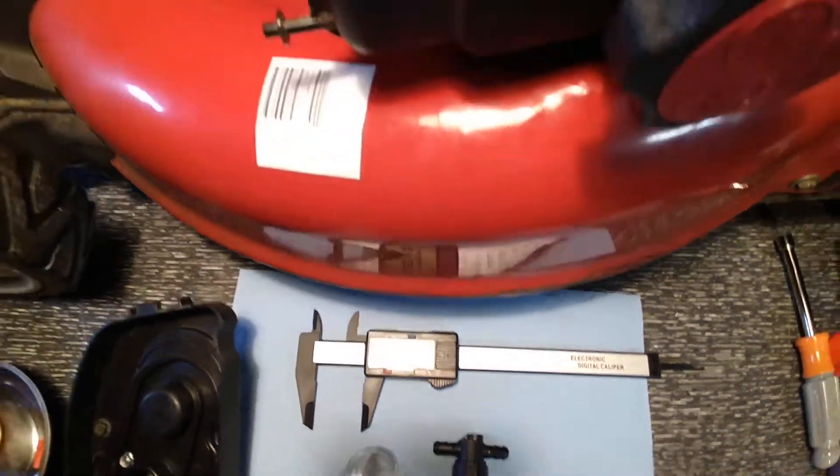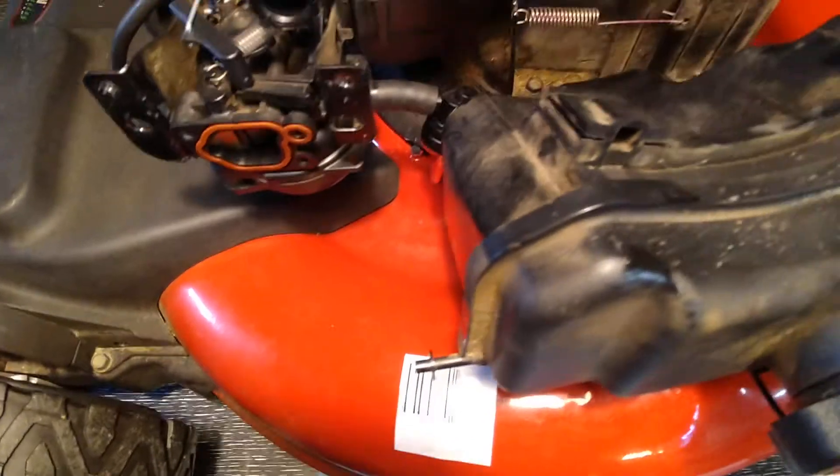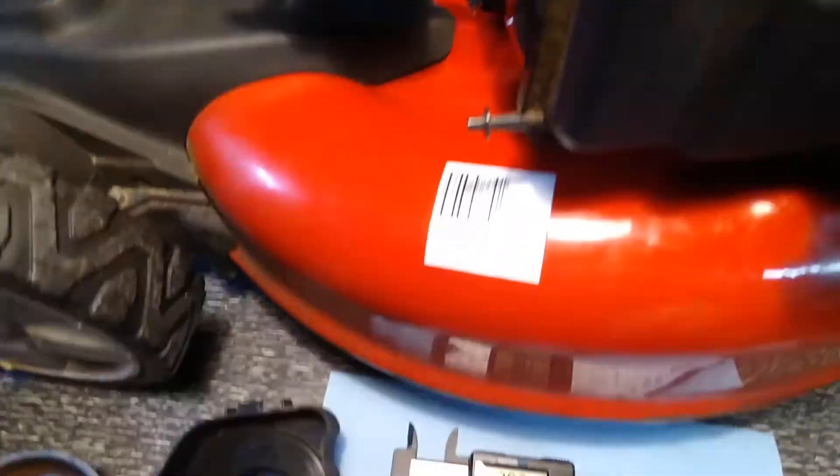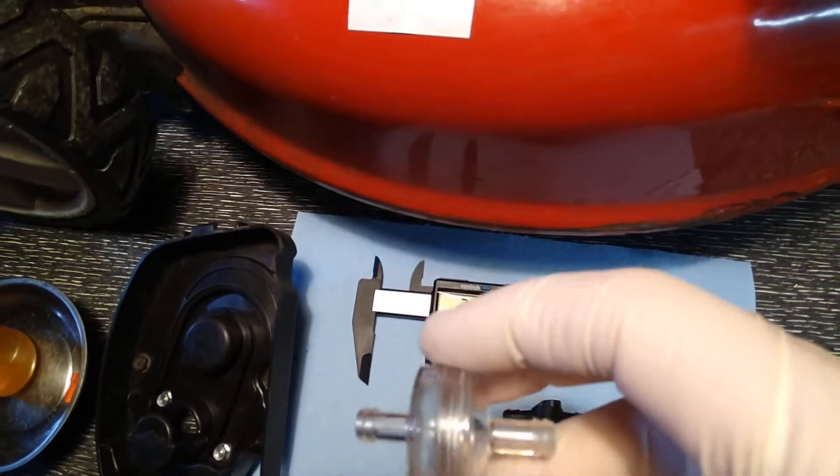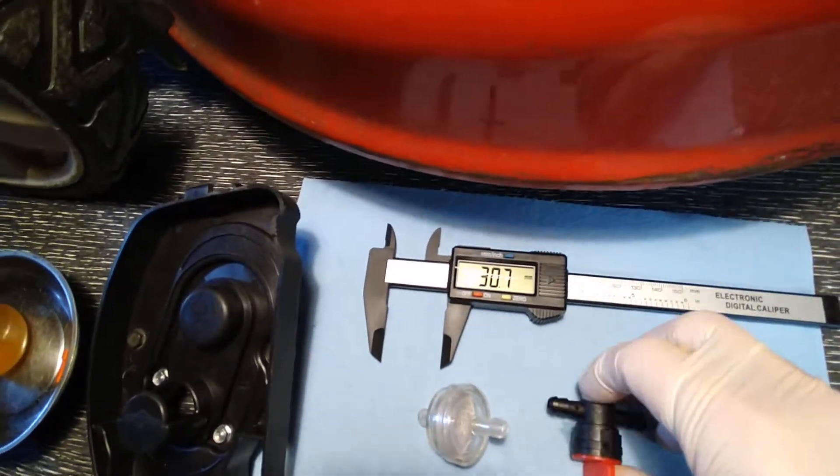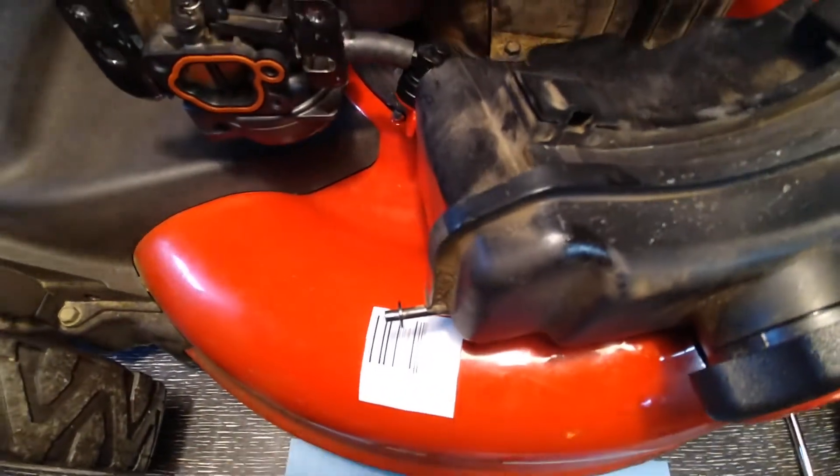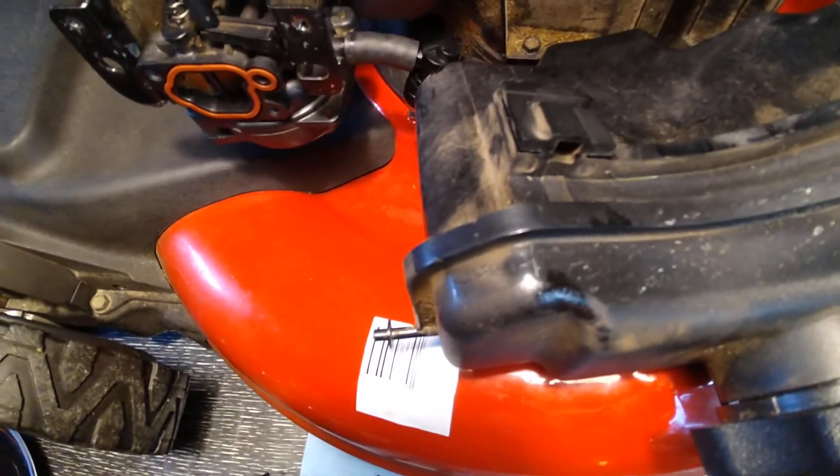So now all I have to do is reassemble everything. If I wanted, there's only room for either a fuel filter or a shut-off, so I chose to put the shut-off. You want to make sure the arrow goes in the direction of the fuel flow.